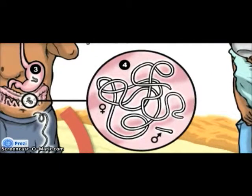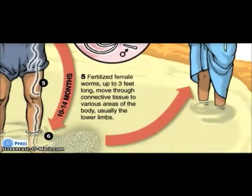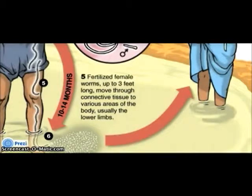In the body cavity, the larvae grow into worms and mate. Here are what the male and female guinea worms look like — as you can see, the female guinea worm is much longer than the male. After approximately 10 to 14 months, the fertilized female worms, up to three feet long, move through connective tissue.